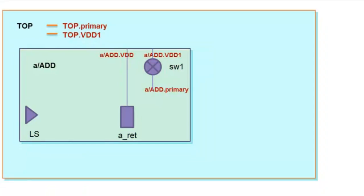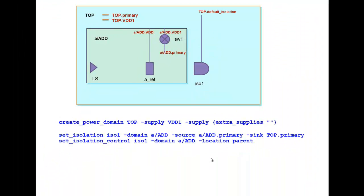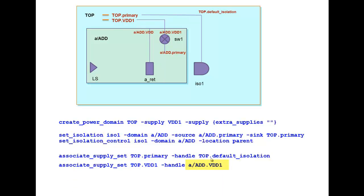We now create the Top Level Power Domain and then define the Isolation Strategy with domain name as a slash add instead of just add. We now associate the Top.Default Isolation to Top.Primary and now we associate the Block Level A slash VDD1 to Top.VDD1 and A slash add.VDD to Top.Primary.